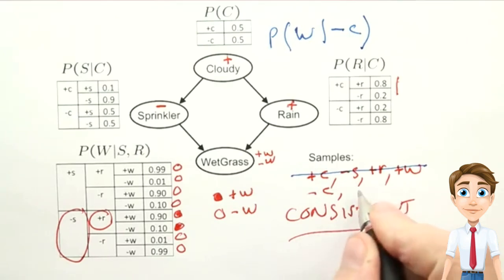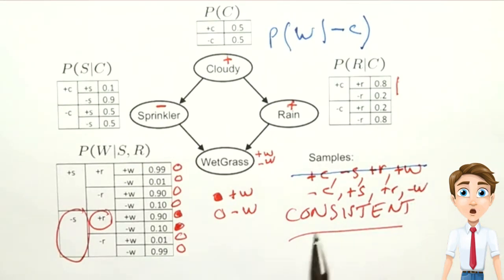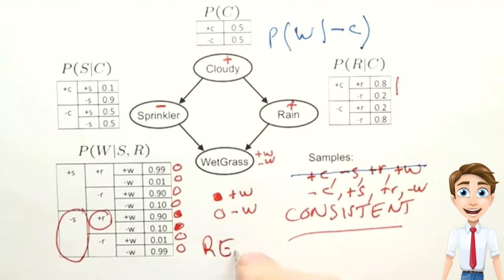Say the sample, minus C, plus S, plus R, minus W. We would just continue going through, generating samples, crossing off the ones that don't match, keeping the ones that do. And this procedure would also be consistent. We call this procedure rejection sampling.